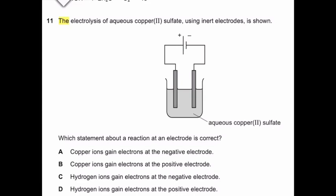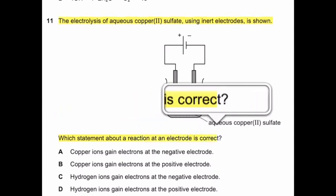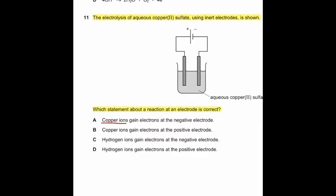Question number 11: The electrolysis of aqueous copper 2 sulfate using inert electrodes is shown. Which statement about a reaction at an electrode is correct? Option A: Copper ions gain electrons at negative electrode. Option B: Copper ions gain electrons at the positive electrode. Option C: Hydrogen ions gain electrons at the negative electrode. Option D: Hydrogen ions gain electrons at the positive electrode. The question shows that there is aqueous copper 2-sulfate solution. It means that there are two types of ions in this aqueous solution. Two types of positive ions are copper ions and hydrogen ions.